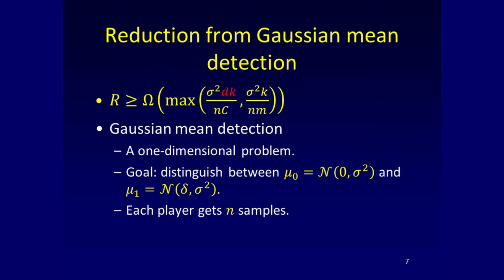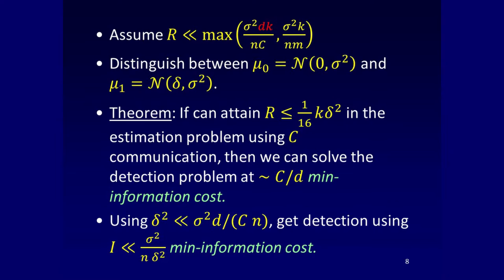In the detection problem, you get samples from one of two distributions: either each machine gets a sample centered around zero, or each machine gets a sample centered around delta. Each machine gets n samples. The goal is to determine which is the case. By a fairly standard direct sum argument, if you can attain too-good-to-be-true error in the estimation problem, you can embed the detection problem into one coordinate and solve it — but not in low communication, in some notion of low information cost.